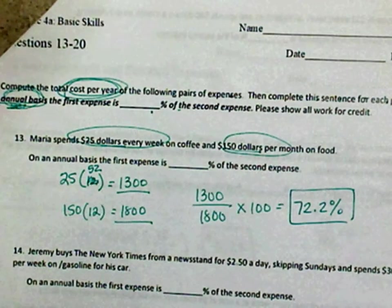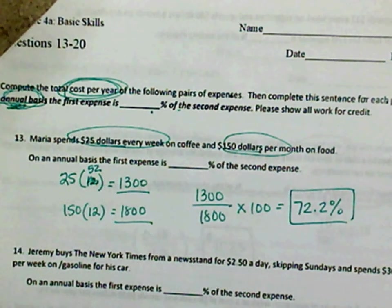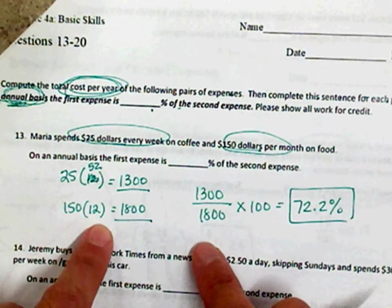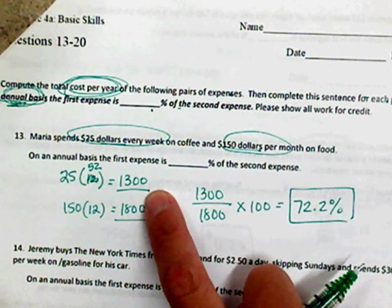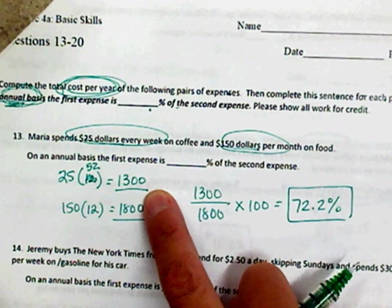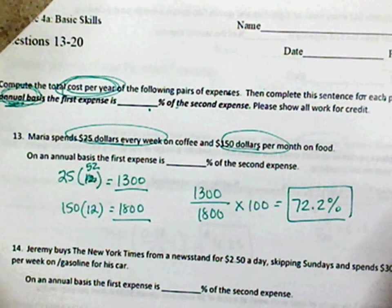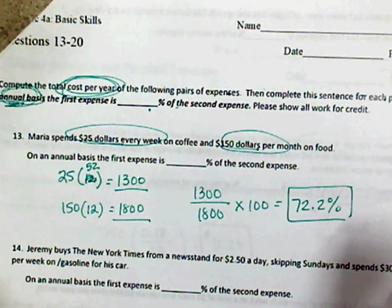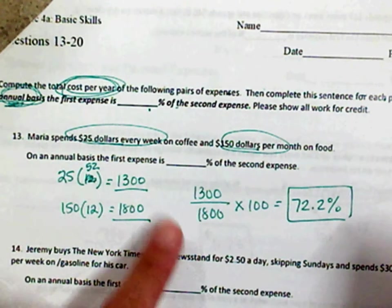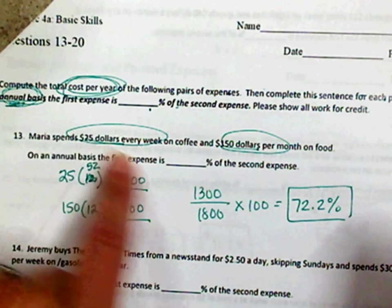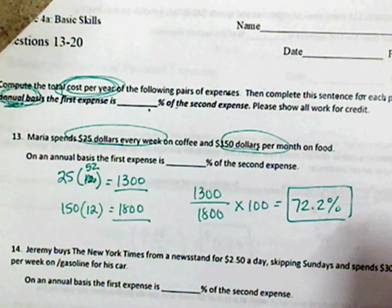what does that mean? That means out of all their expenses, 75% of her expenses goes toward coffee as compared to food. That's what that means. She's drinking a lot of coffee. I suggest she doesn't go to Starbucks and maybe make some coffee at home. That's $1,300 on coffee. So the expenses of the first against the second one is 72.2%. That's a lot of coffee compared to food.